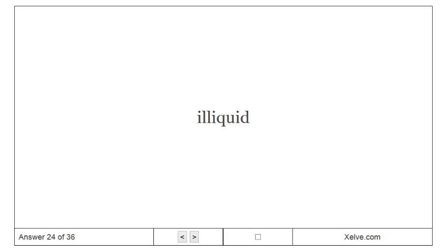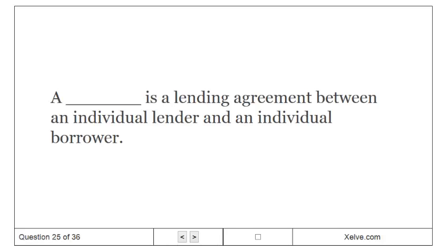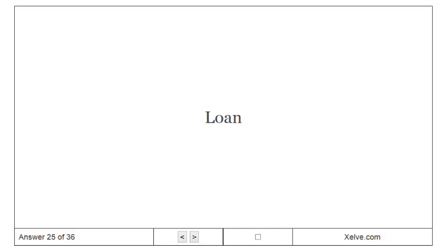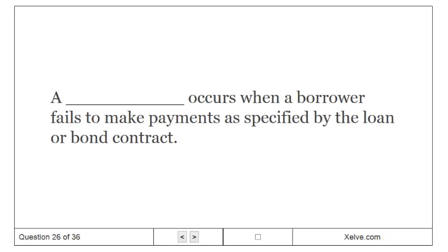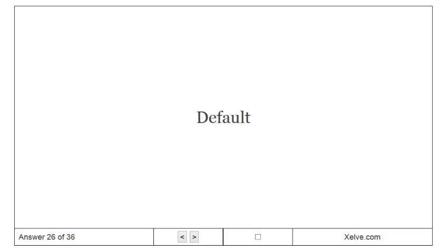A loan is a lending agreement between an individual lender and an individual borrower. A default occurs when a borrower fails to make payments as specified by the loan or bond contract.